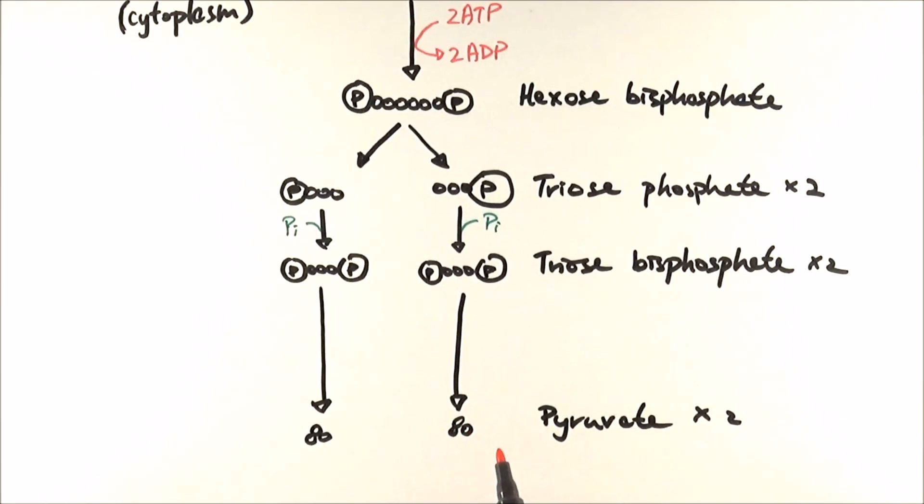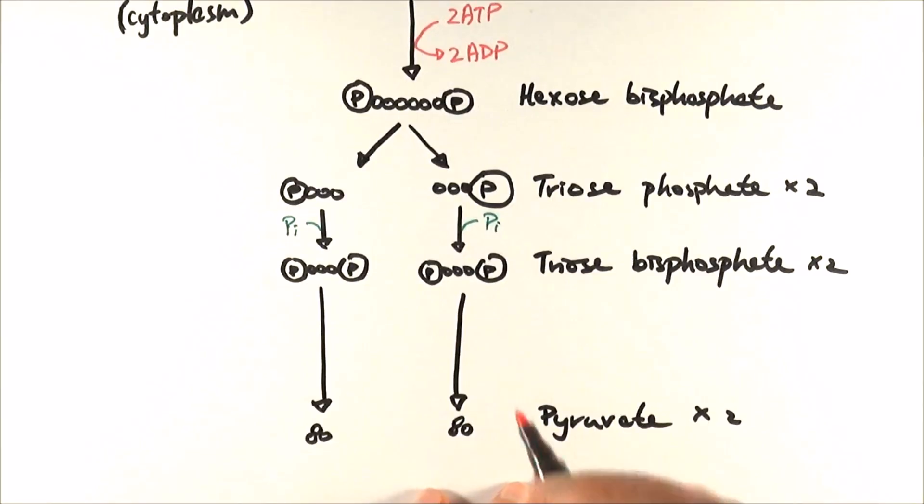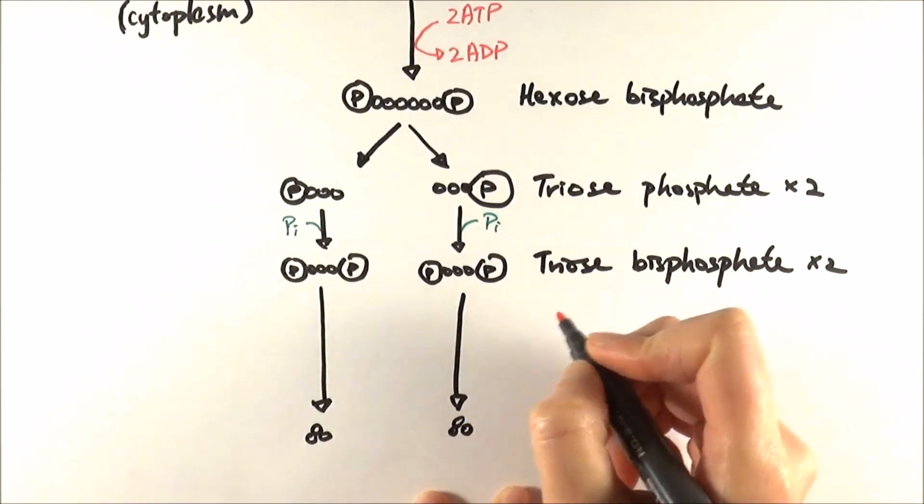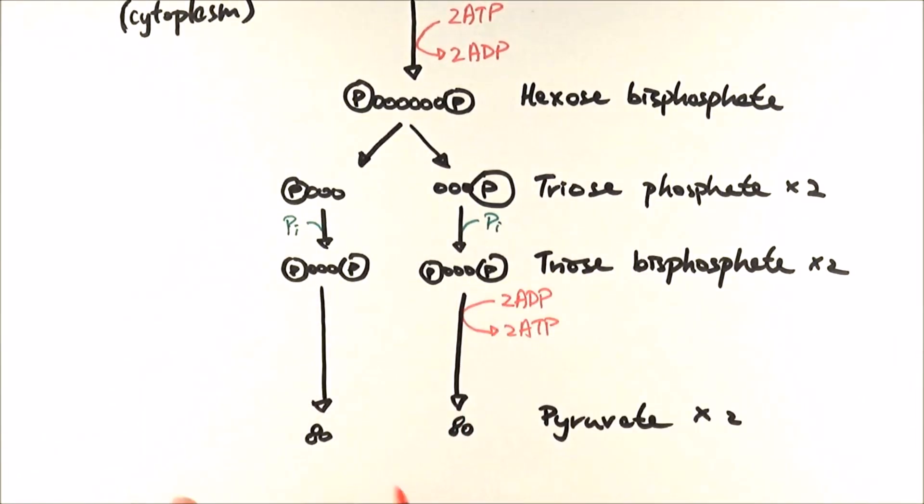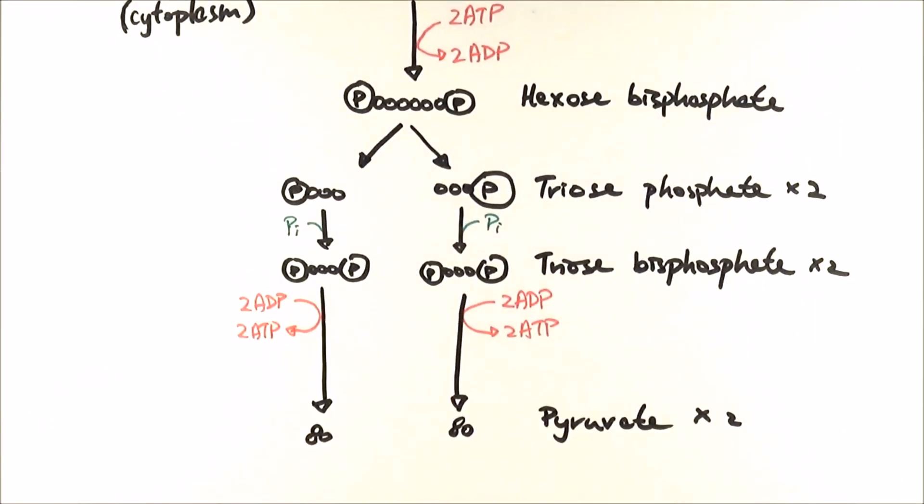The reason for that is because 2 ADP comes along to collect those two phosphate groups to make ATP, which is the reason we want to do the whole respiration to begin with. The same thing happens here. Bear in mind there are two phosphate groups here, so we need two ADP, and they each collect one.